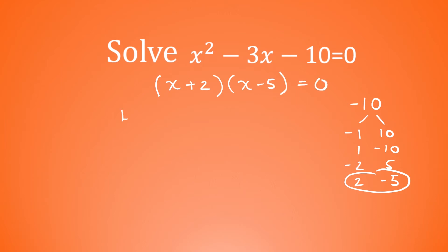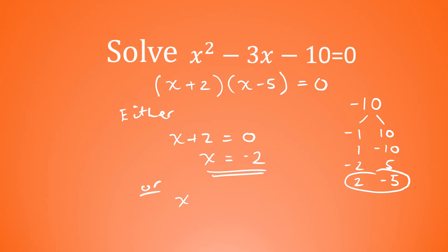Then just the final couple of steps: we say that either x add 2 is equal to 0, in which case x is equal to negative 2, or x minus 5 is equal to 0, in which case x will be equal to 5. So those are our two solutions for this one.